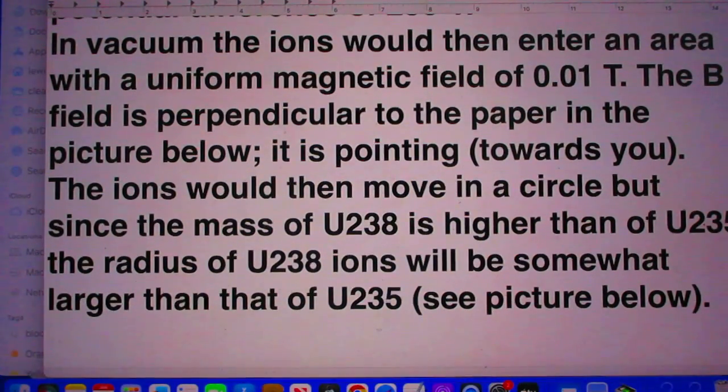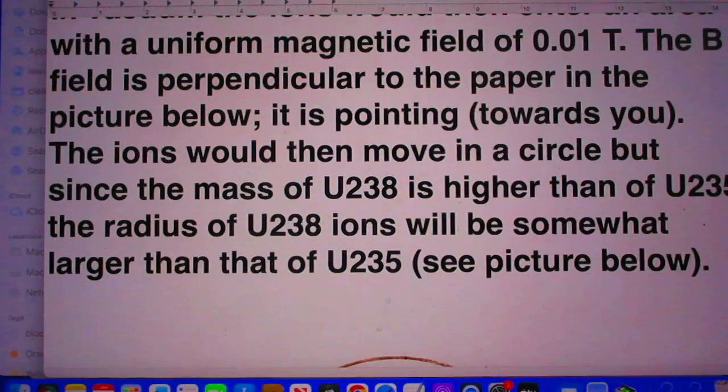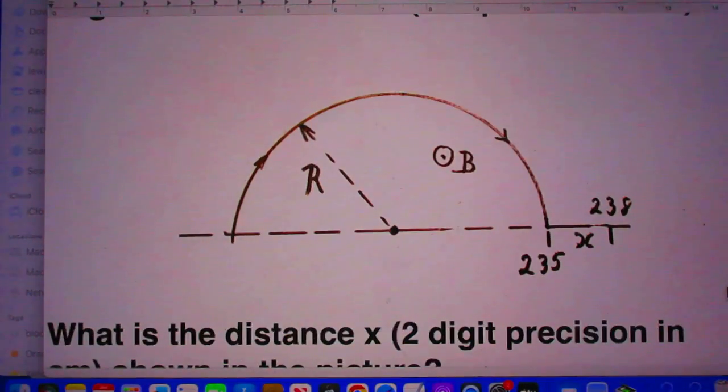In vacuum, the ions would then enter an area with a uniform magnetic field of 0.01 tesla. The B field is perpendicular to the paper in the picture below and it is pointing towards you. So here you see the picture, and the dot next to the B means that it is pointing in your direction and it's perpendicular to the paper.